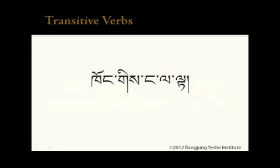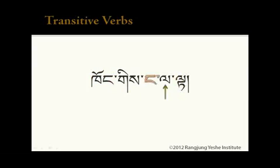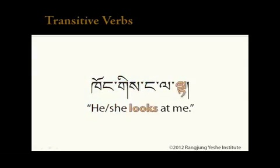Let's try another one: 'Khong gis nga la lta.' Khong is the agent, marked by gi. The verb lta means 'look.' The object is nga, marked by la, meaning 'at' in this case. So we have: he or she looks at me.